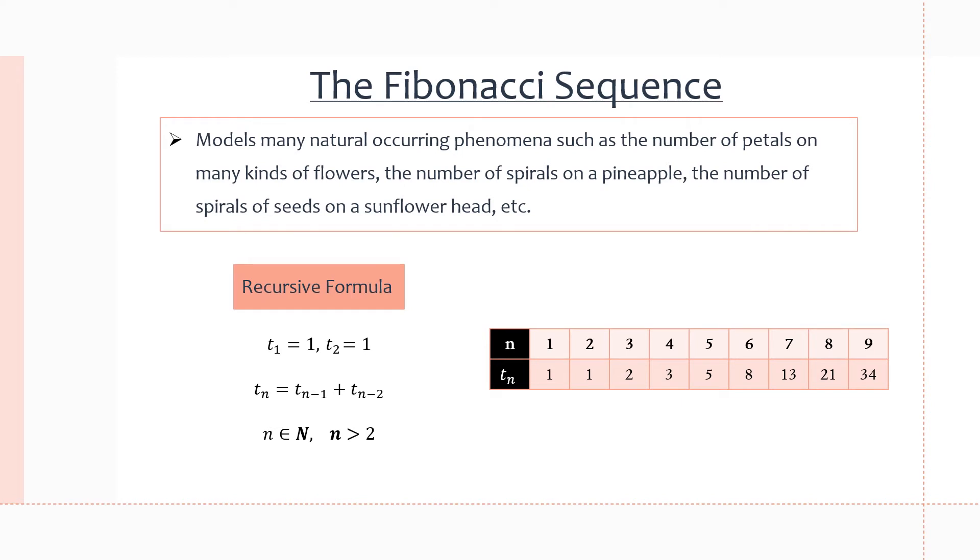So what is the Fibonacci sequence? Well, it is a sequence that models many of the natural phenomena in the world. It models things like the number of petals on many kinds of flowers, the number of spirals on a pineapple, the number of spirals of seeds on a sunflower head and more. So it is a very important and well-known sequence in mathematics.